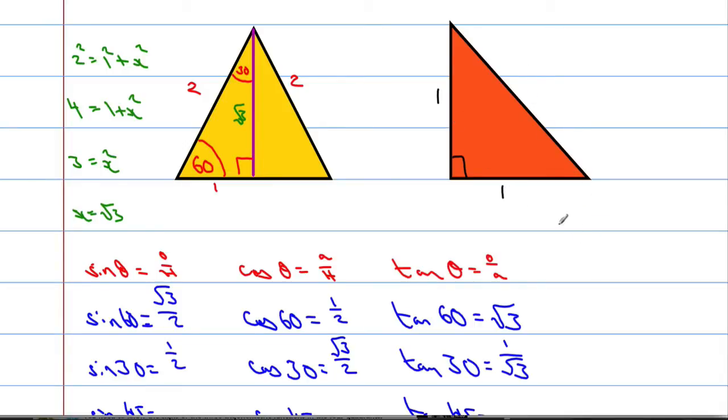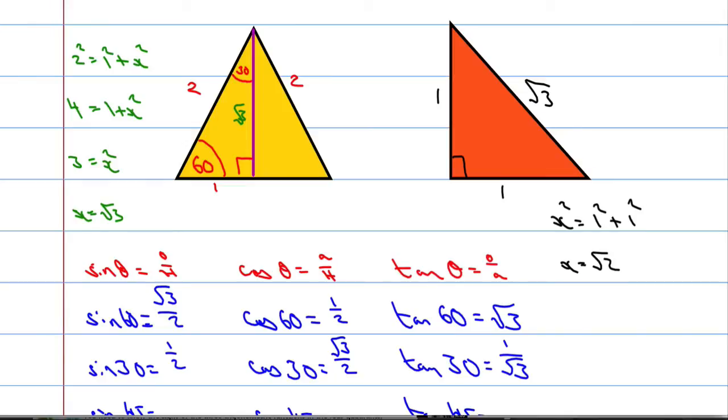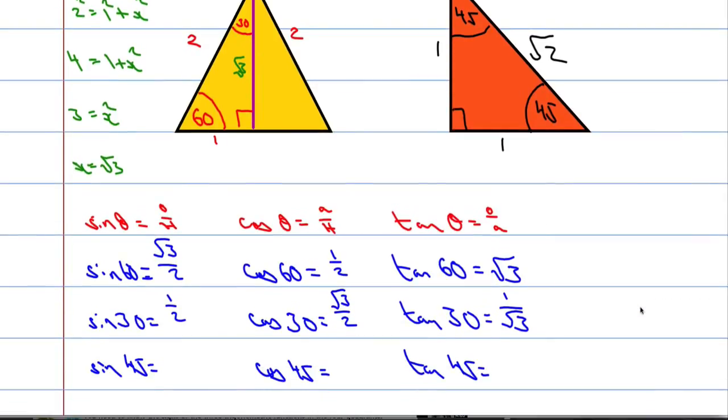So this side squared, call it x if you will, x squared is going to equal 1 squared plus 1 squared. 1 squared and 1 squared is 2. So that means that x is going to be the square root of 2. And then just like before, because it's an isosceles right angled triangle, that means that this side here must be 45, or this angle should I say. And this angle here has got to be 45 as well.